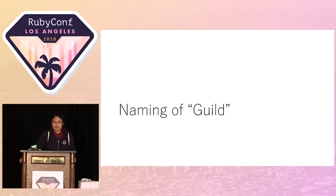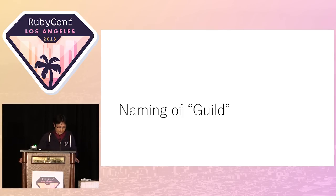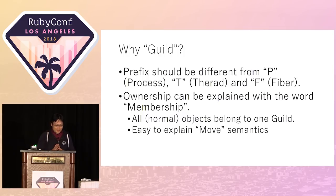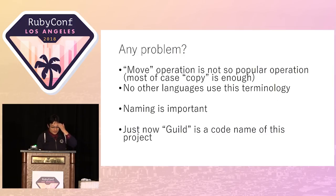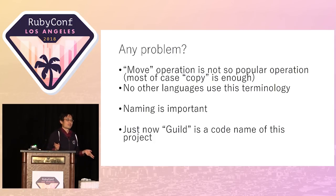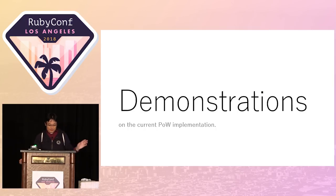Another topic is naming. In the Ruby world, naming is important. The current Guild name is a codename. Some people say Guild is not such a good name, so we are considering renaming it. I want to share that Guild is a codename and we are seeking new, good names.